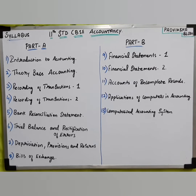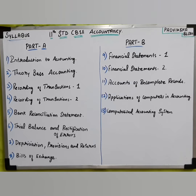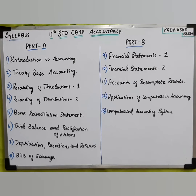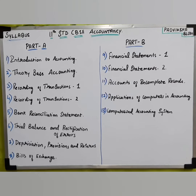Now let's look at Part A. The chapters in Part A are: first, Introduction to Accounting; second, Theory Based Accounting; third, Recording of Transactions 1; fourth, Recording of Transactions 2; fifth, Bank Reconciliation Statement; sixth, Trial Balance and Rectification of Errors; seventh, Depreciation, Provisions and Reserves; and eighth, Bills of Exchange.